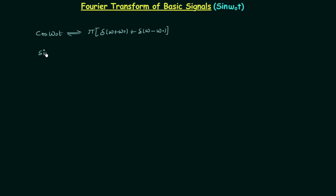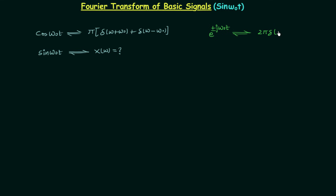In this presentation we will calculate the Fourier transform of sin(ω₀t) and let's say its Fourier transform is equal to X(ω). We know the Fourier transform of e^(±jω₀t) is equal to 2π multiplied by δ(ω ∓ ω₀). We will use this to calculate the Fourier transform of sin(ω₀t).